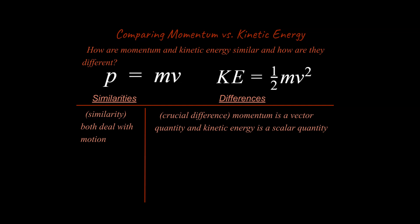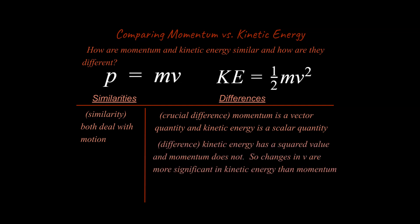Another important difference is that kinetic energy involves a squared velocity value, so changes in speed are more significant in kinetic energy. For example, if a UFC fighter's punches are three times faster at the start of a match than at the end, his punches carry three times more momentum. But the kinetic energy — the ability to do work and cause change — is nine times greater. That squared value is important and a significant difference between the two.